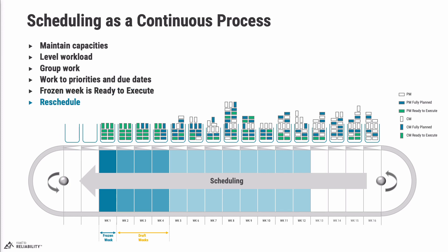The last role is for the scheduler to reschedule work from the frozen week if it was not completed — whether due to a break-in emergency or something else that prevented completing the work. This is not a full job description of the scheduler, but it gives you a good idea of the role the scheduler plays in the continuous planning and scheduling process.